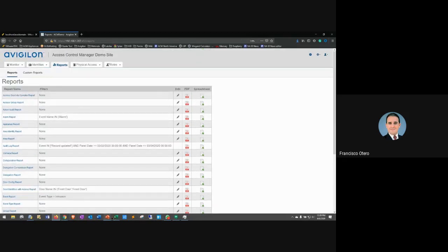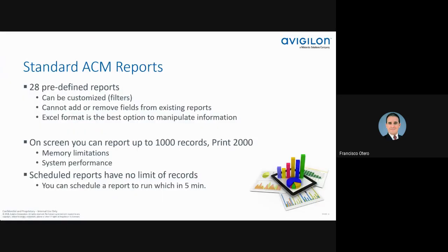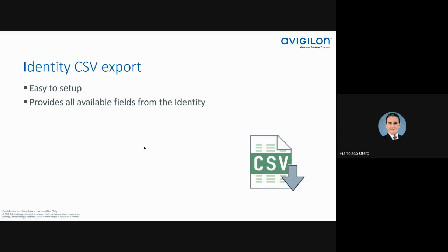So we covered the 28 reports, filtering, 1,000 records on screen, printing 2,000, and scheduling for large amounts of data. The next item is the CSV export — the identity CSV export. I could use that also as a report. Let's go ahead and take a look at that. If you go into Identity, you'll see — especially in my system — the typical record.